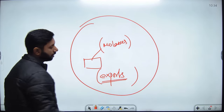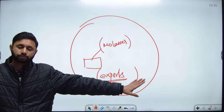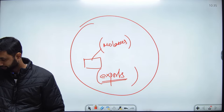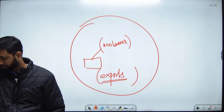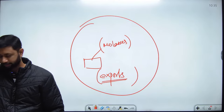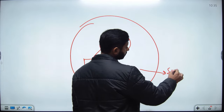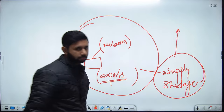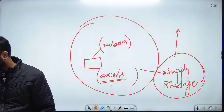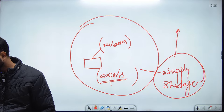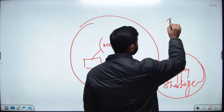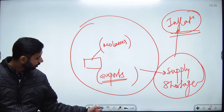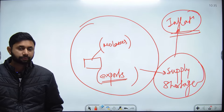Why does the government not want these products exported? The government doesn't want supply shortage in the domestic economy because supply shortages lead to price rise — what we call inflation, specifically supply-induced inflation. That's why the government imposes different types of export duties.